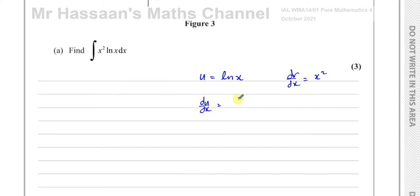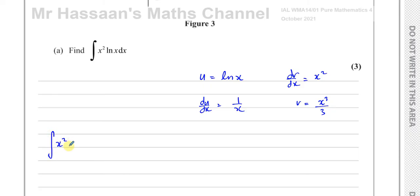So du/dx is 1 over x, and we have to integrate dv/dx, so v becomes x cubed over 3. This one we differentiate, this one we integrate. The rule for integration by parts is in the formula book, but when you set out your work this way I never even look at it — I always put u on my left and dv/dx on my right, underneath u I write du/dx, underneath dv/dx I write v, and I know I have to multiply u times v.